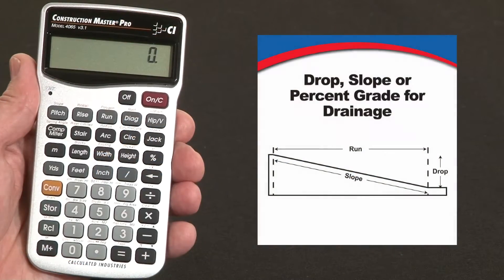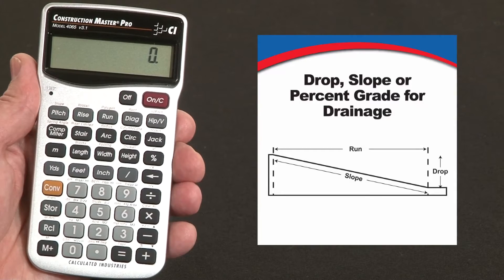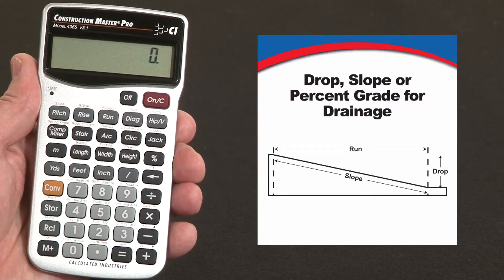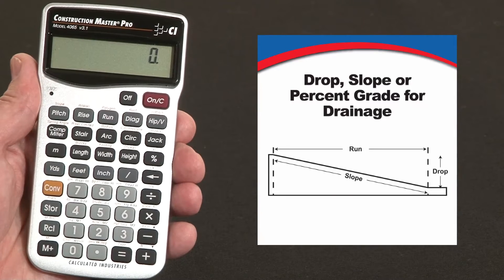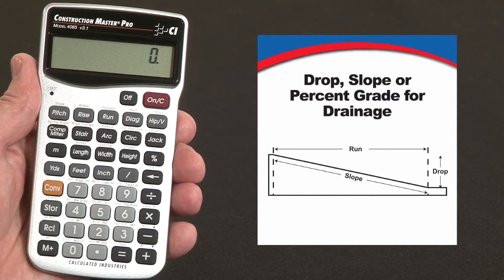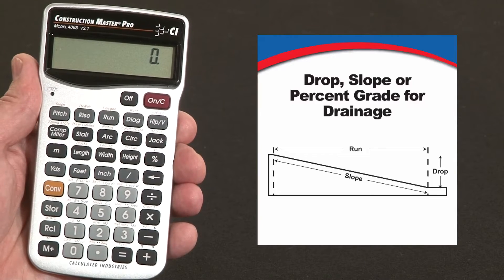Now let me show you how to find the slope, drop, or drainage for a pad using the Construction Master Pro. Keep in mind, if you're using the trig model or the desktop model, the keystrokes will be exactly the same. It's a handy feature for figuring the drop or slope of a driveway, trench, drain pipe, or anything with a slant.